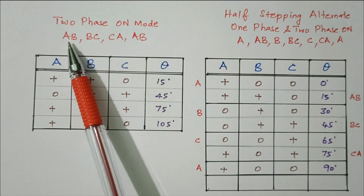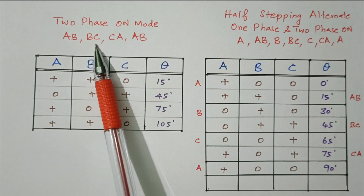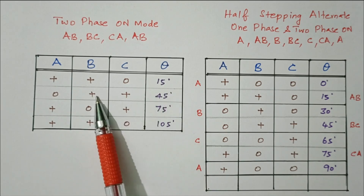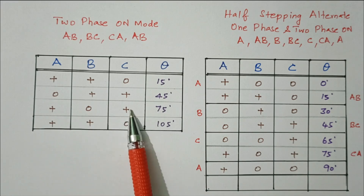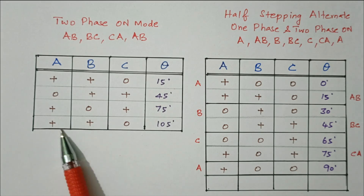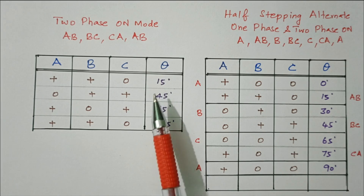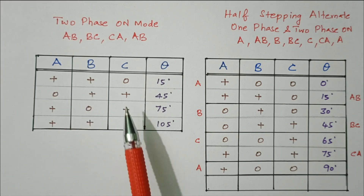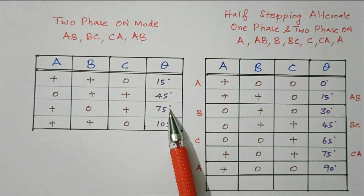In two-phase-on mode, two phases are energized at a time. The excitation order is: a&b, b&c, c&a, a&b. When a and b are excited, it rotates 15 degrees. Then b and c, rotating another 30 degrees (total 45°). Then c and a, another 30 degrees (total 75°). Then a and b again, reaching 105 degrees. Each excitation step is 30 degrees, but the initial position starts at 15 degrees.